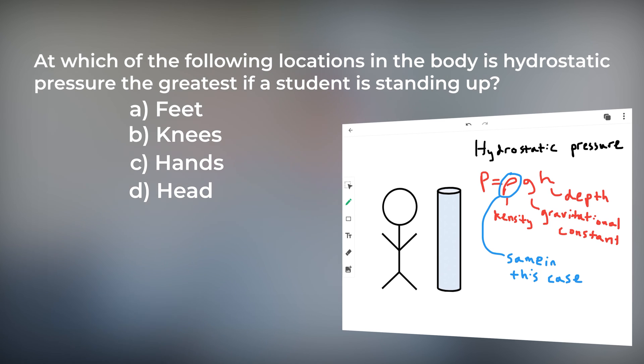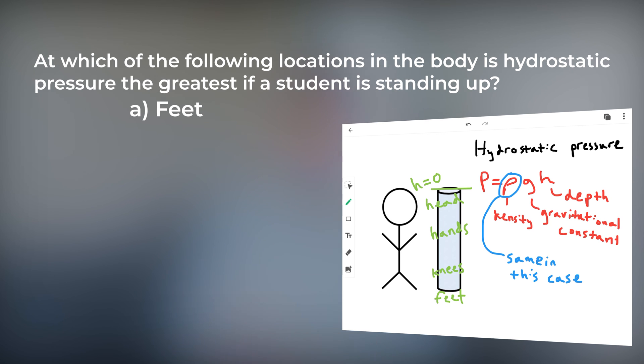If we define the top of the container as height zero, where is the deepest part of the container? Is the container deepest where it corresponds to the student's head, hands, knees, or feet? If you said feet, then you are correct.